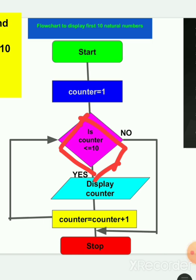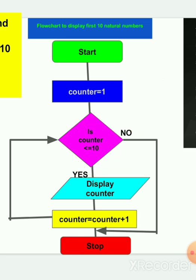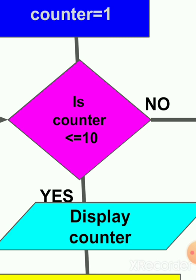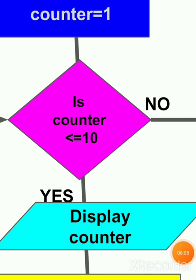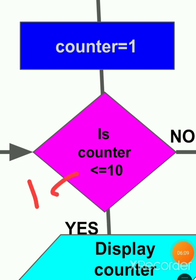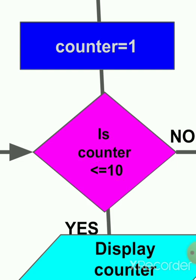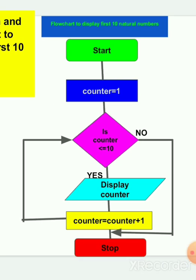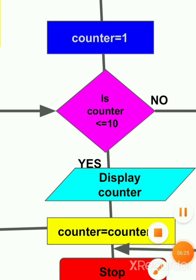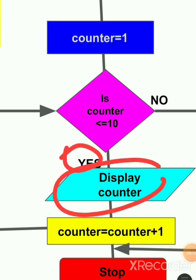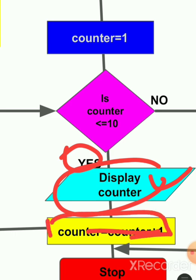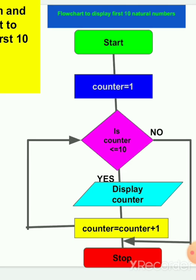Next, we want to make a decision: is counter less than or equal to 10? The diamond shape is the decision-making symbol. Initially counter is one — is one less than or equal to 10? Yes. So we go to the next step: print. The parallelogram symbol is used for input and output — here it prints the counter value, which is one. Then counter is incremented — counter equals counter plus one — it becomes two.